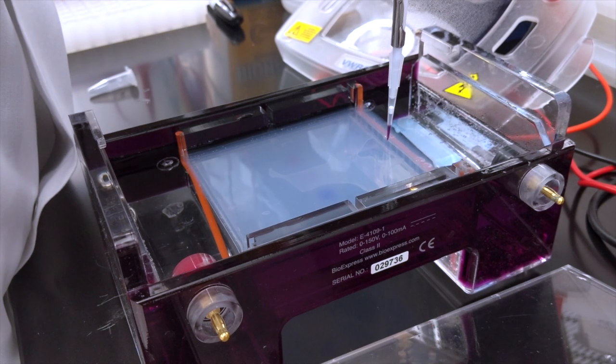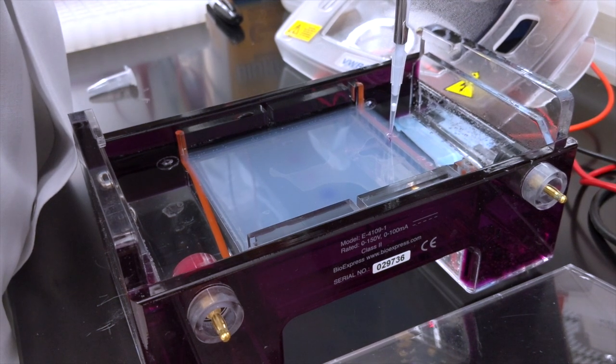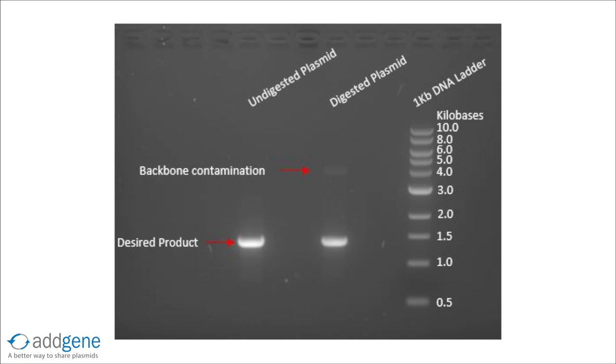Once the DNA has been isolated from the gel, run a small aliquot on a new agarose gel to confirm the product is present, the correct size, and free from contaminating backbone.